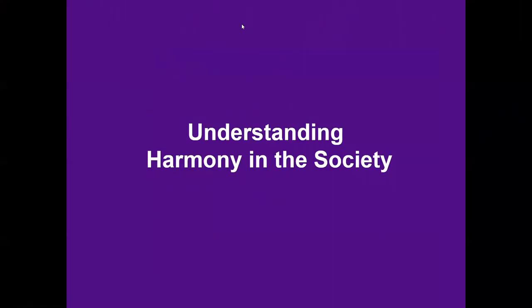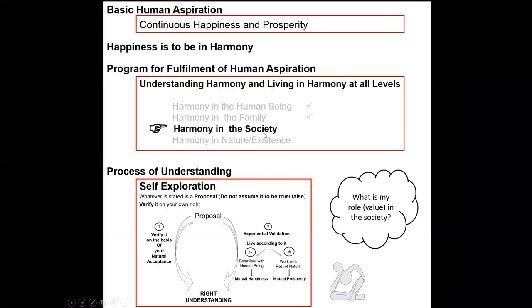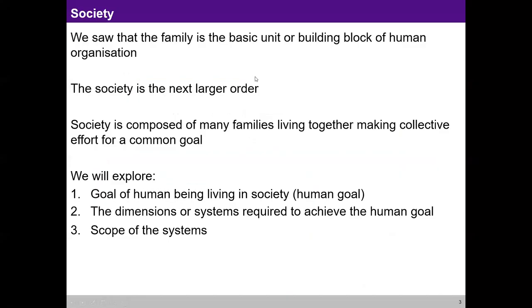Namaste. So far we discussed about harmony in the family, and the next level of our living is society. We'll now explore understanding harmony in the society. The process is the same — self-exploration, taking whatever is said as a proposal, verifying on one's own, and trying to live accordingly. Family is the basic unit or building block of human organization, and society is composed of many families living together making collective effort for a common goal.